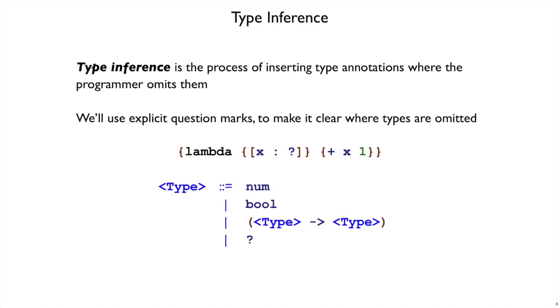That means our grammar for types changes to num, bool, arrow, or a question mark. And again question mark means that the type inference part of our new curly implementation should figure out what type without question marks goes in place of any question mark.